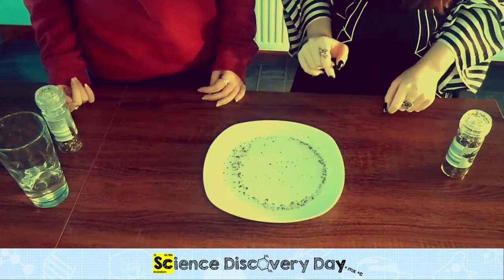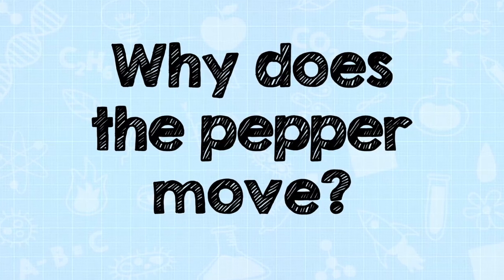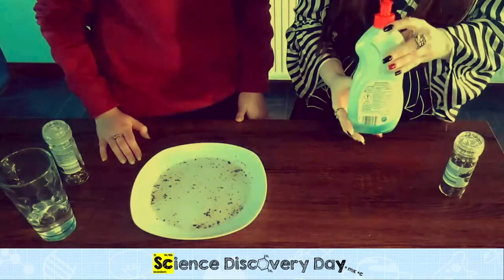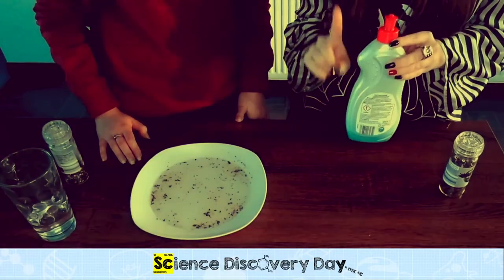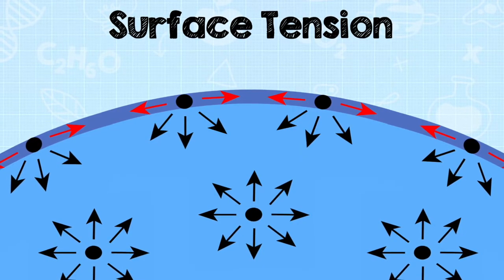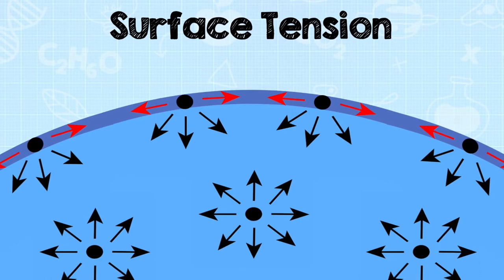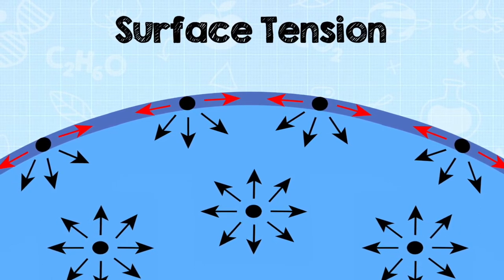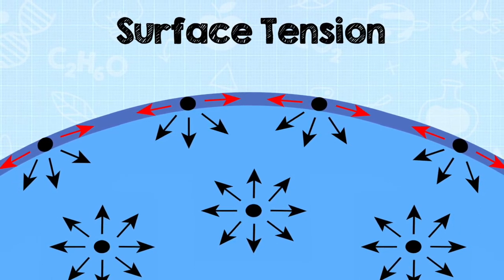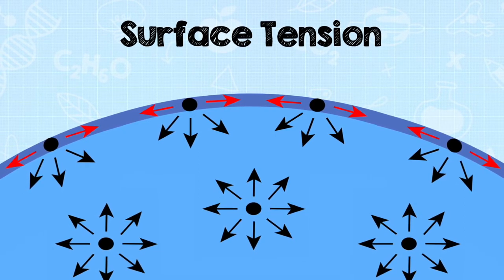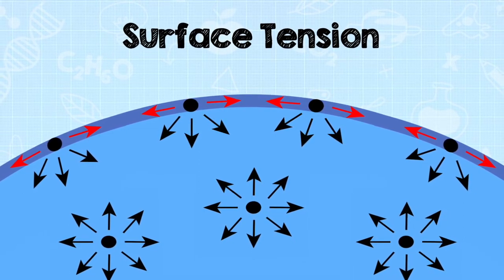So why does the pepper move when Tilly touches the water? Well, the secret is, before the trick, I put washing up liquid onto the tip of my finger. The pepper floats in the water because water has what's called surface tension. Water molecules are attracted to each other. This is also how water droplets form. On the plate, the top layer of water is attracted together, and this is what surface tension is.